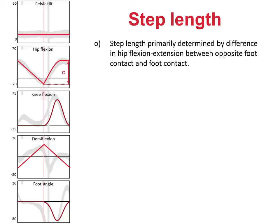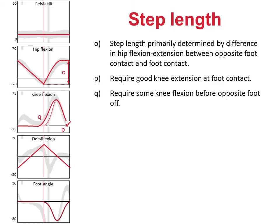Hip extension for the trailing limb is indicated opposite foot contact, whereas hip flexion for the leading limb is indicated at foot contact. Step length is also helped by good knee extension at foot contact, but we already have this. Some trailing knee flexion at opposite foot contact is also beneficial. It can be seen that this brings our knee curve a little closer to that found in the normal data.